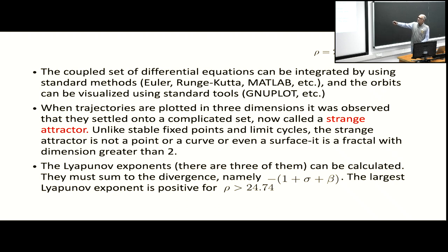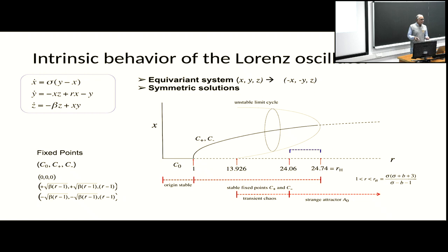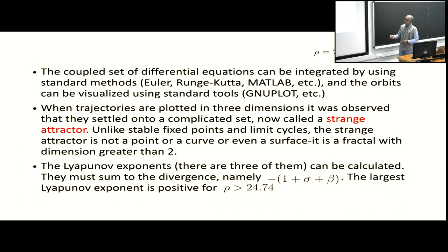These are the values that Lorenz settled on. At R equals 28, there are no fixed points that are stable — you only have the strange attractor. If he had chosen a smaller value, it would have been very difficult to generate so much interest. His whole idea was to try to prove that the weather is aperiodic and therefore not predictable. Weather forecasting is not an easy science.